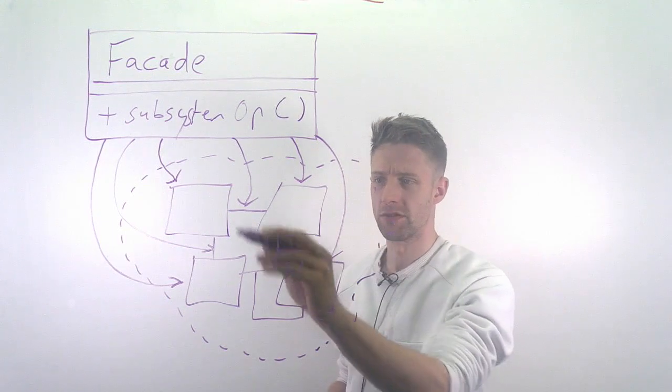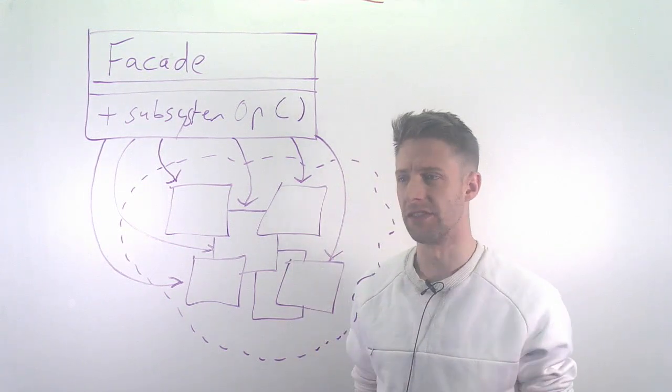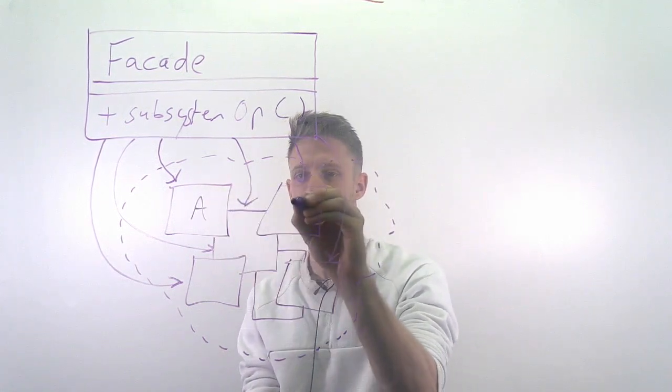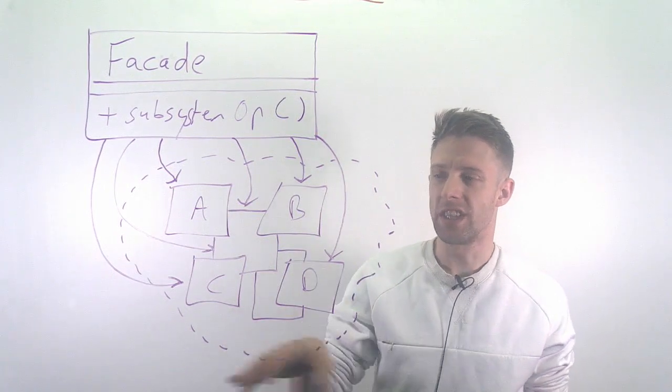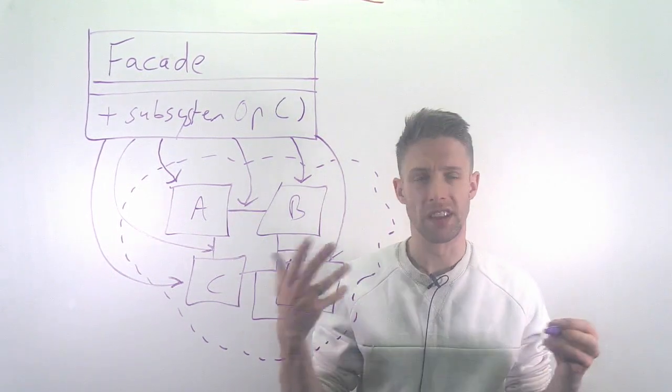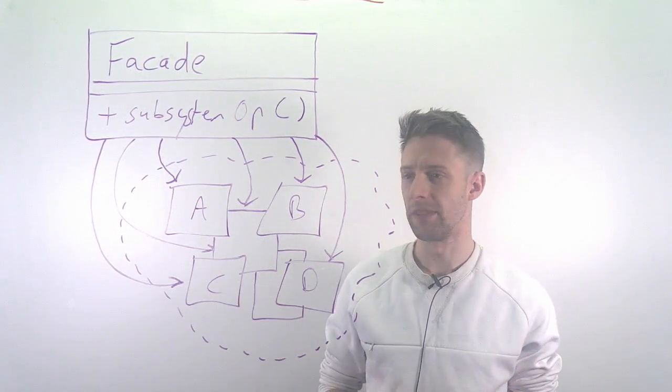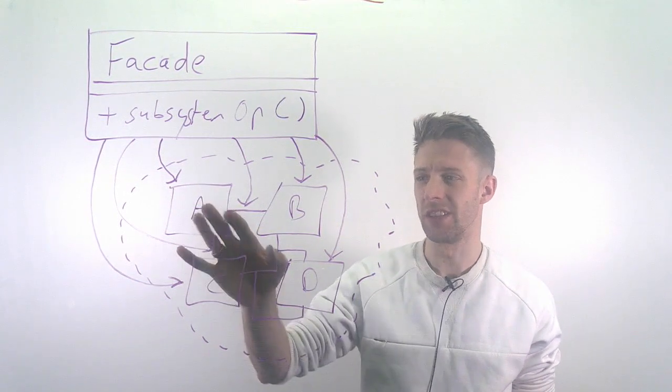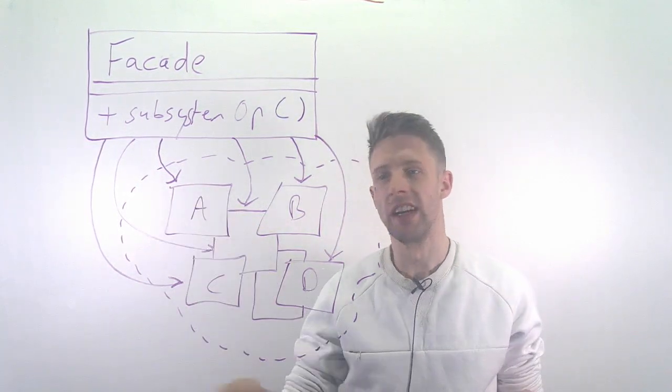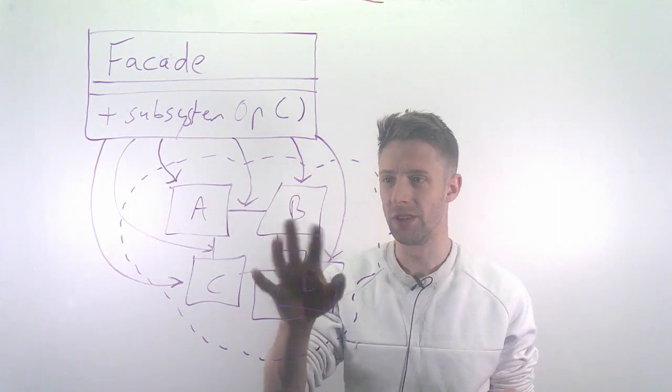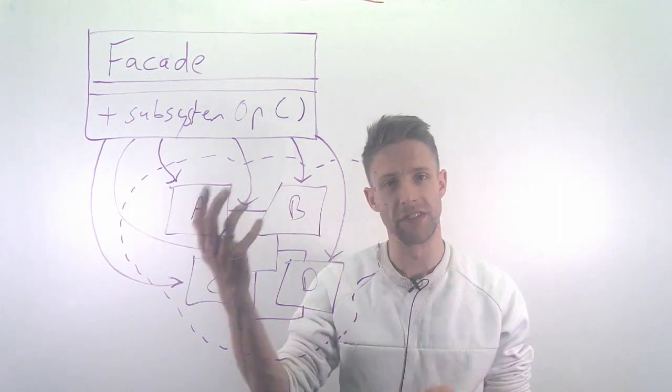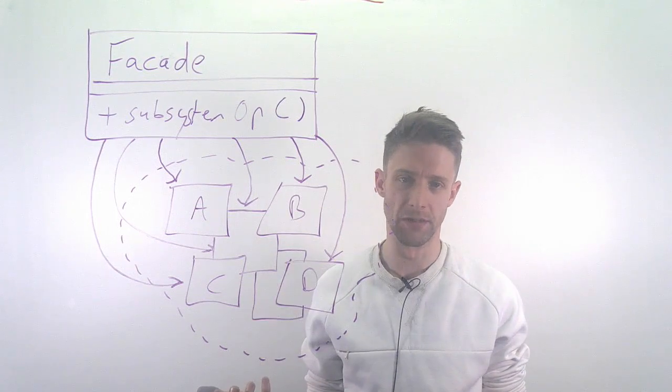For example, you have a number of classes A, B, C, D. In order to achieve some functionality—we could take our routing example from earlier—you need to create an instance of A first, then create an instance of B and provide A, and this continues. You need to call them in a very specific order to get the functionality you'd like, and this can of course be difficult to use.